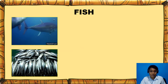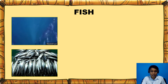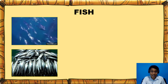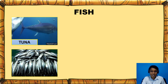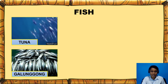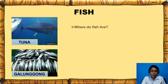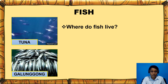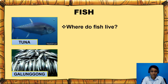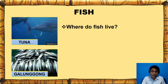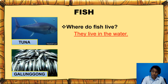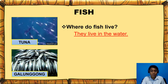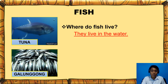How about these fish? How do you call them? That's a tuna and galunggong. Now, where do fish live? They live in the water — it can be in the ocean, sea, river, or pond.